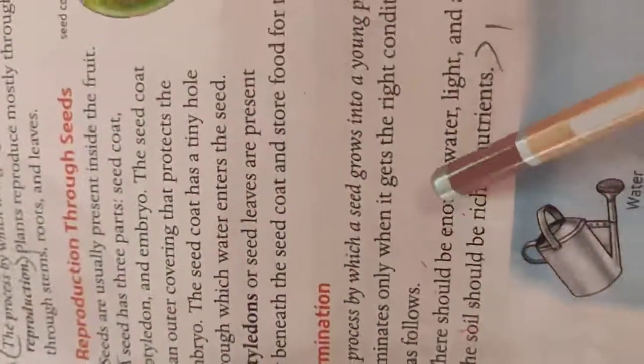Germination. The process by which a seed grows into a young plant is called germination. Germination occurs only under the right conditions. These conditions are as follows.